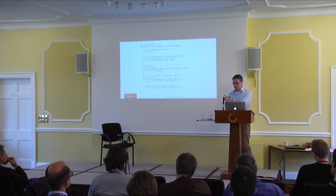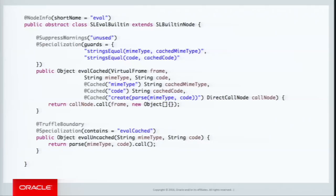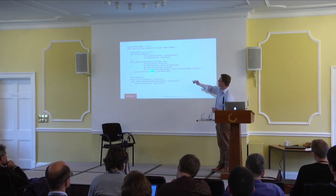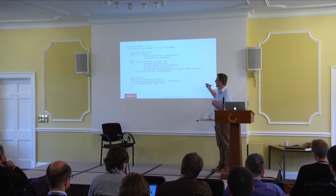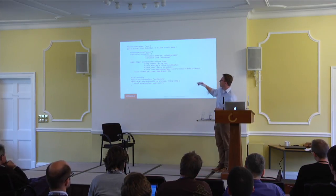This next example is quite complicated — the eval node from simple language. There's a specialization that caches the code seen previously and the compiled version of it. It takes a MIME type and a piece of code, caches them and the result of parsing into an AST, and then next time can simply call that directly — with guards to check it hasn't changed. So it's not just types — you can specialize and cache for anything you like, even the time of day if you want.